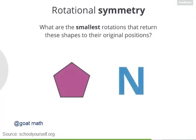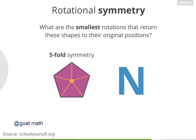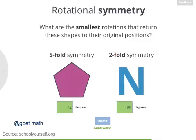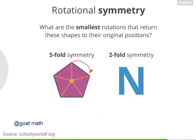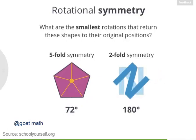Next, try finding the smallest rotations that will return these shapes to their original positions. You have a regular pentagon with five-fold symmetry — how much do you need to rotate it so that this vertex moves over to this vertex? And what's the smallest rotation for the letter N, which has two-fold symmetry? To get this vertex over here, you need to rotate the pentagon one-fifth of a complete rotation, or 72 degrees. And you need to rotate the N 180 degrees to get it back to its original position.